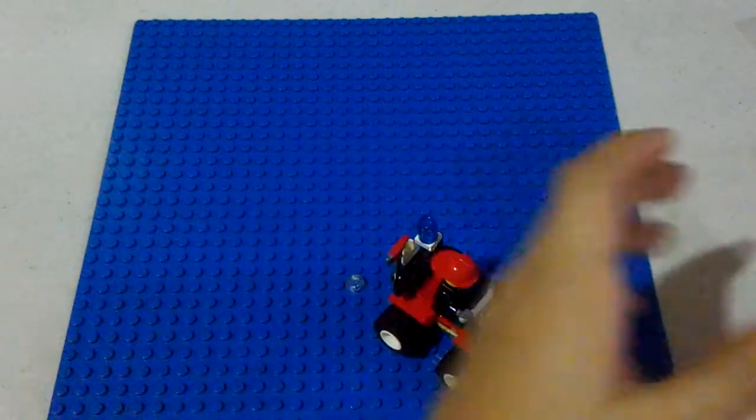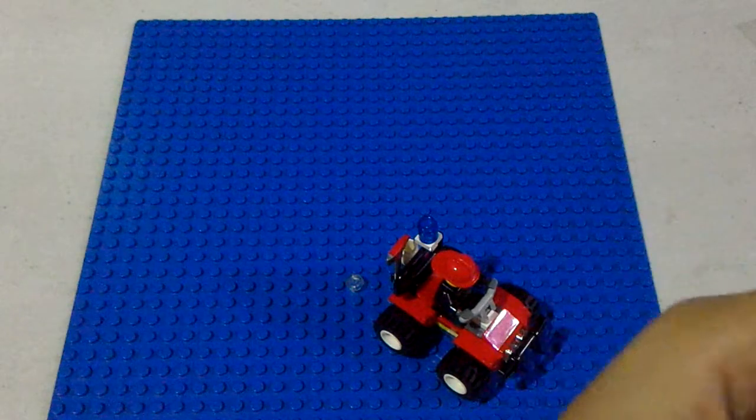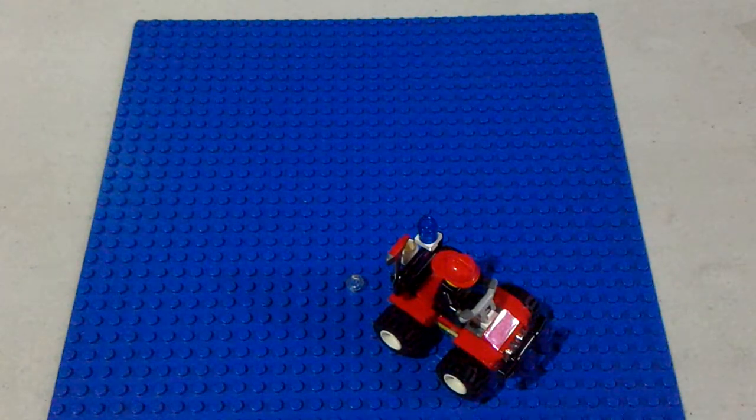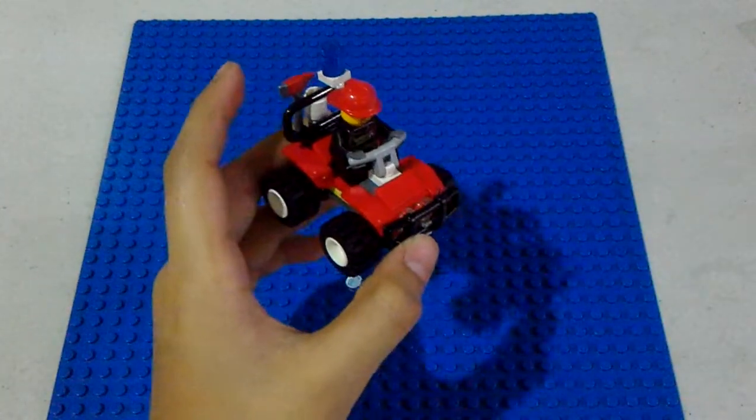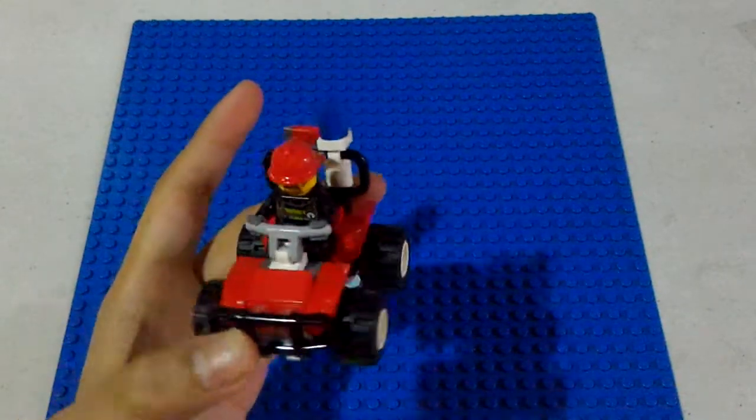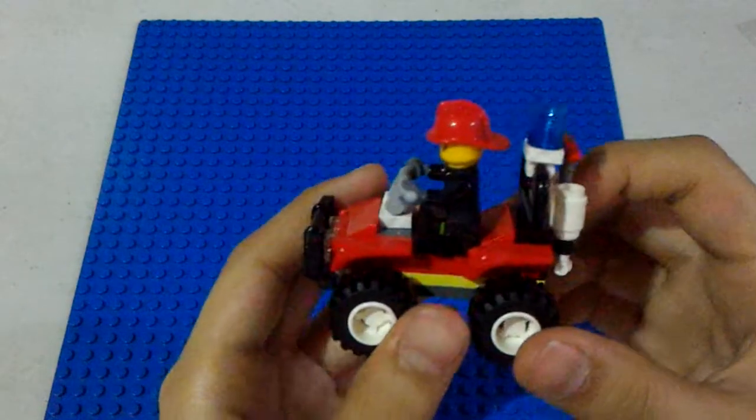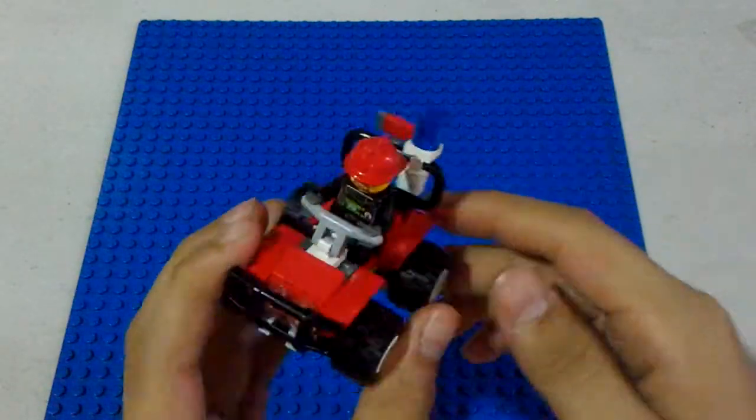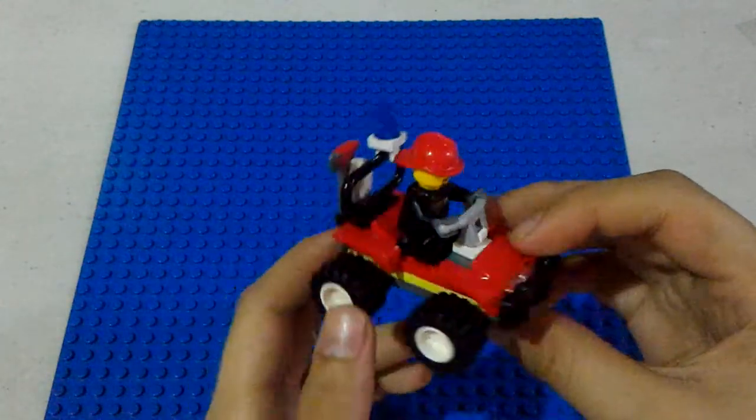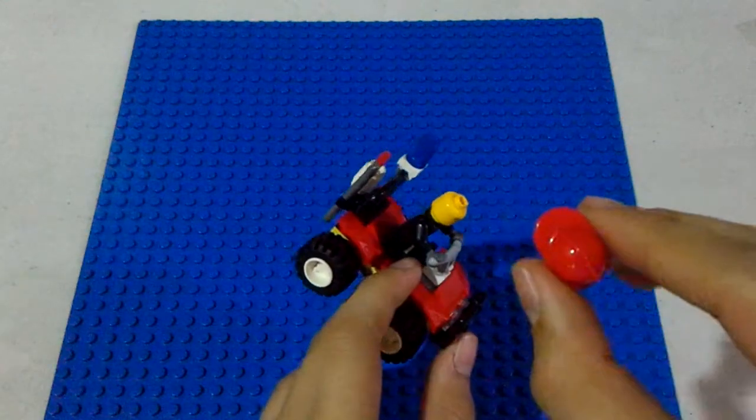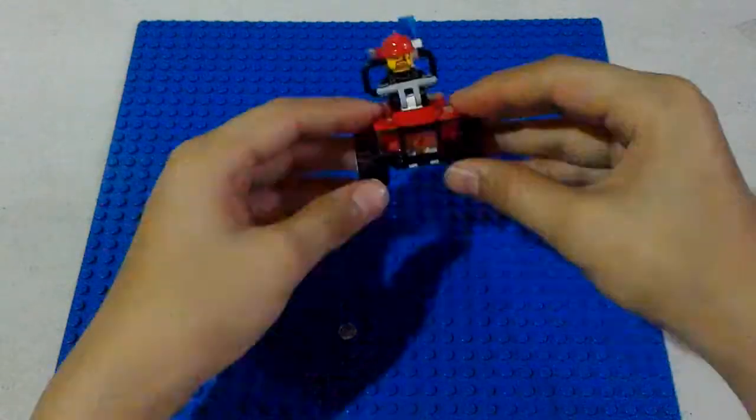So this is the complete LEGO City Fire ATV. Using this you can add to your collection of ATVs or you can also just collect Fire ATVs. So right now there is this axe that's a special piece and this frontal piece here. So far I have not seen any sets with this red fire fighter helmet yet. But I hope to see more of it soon.